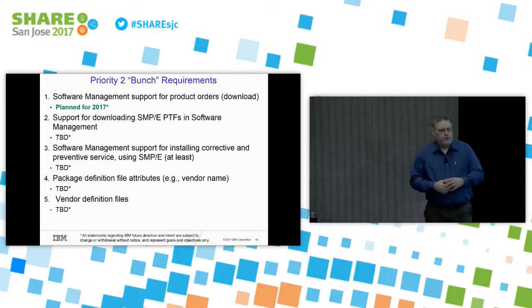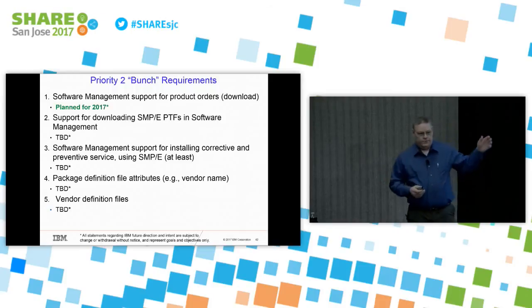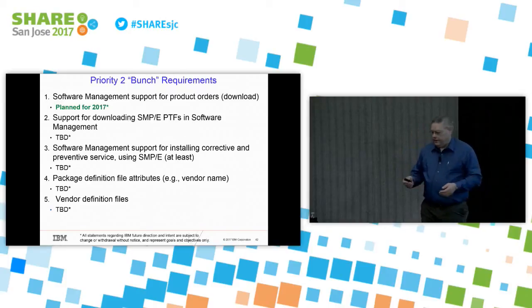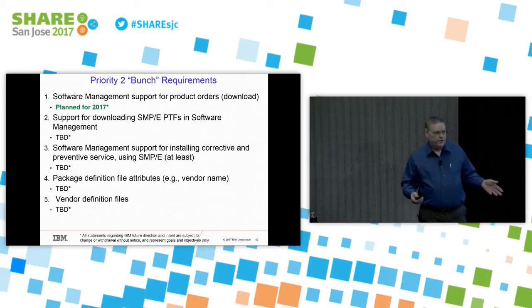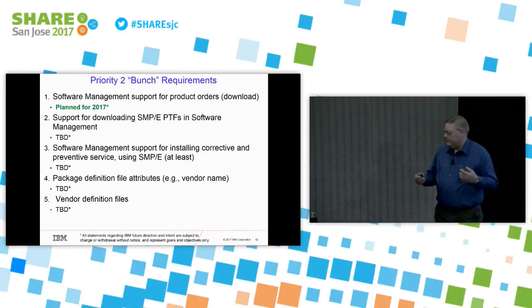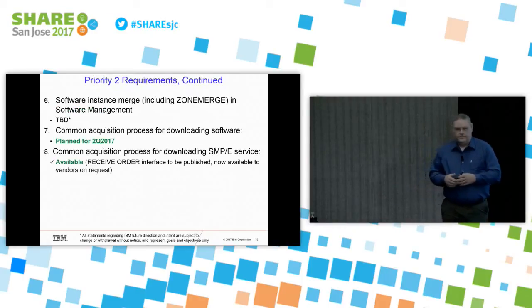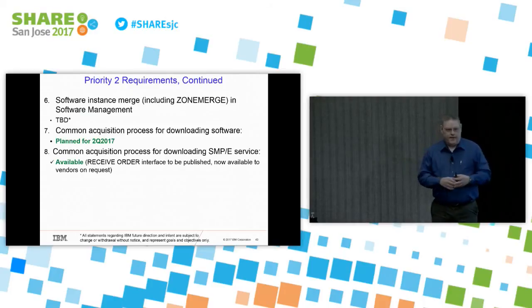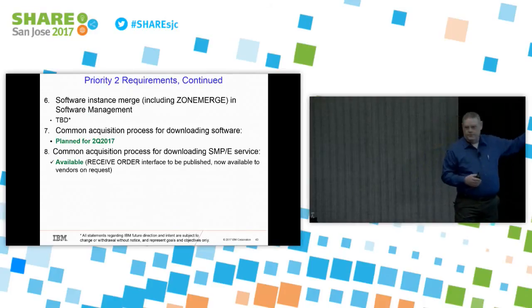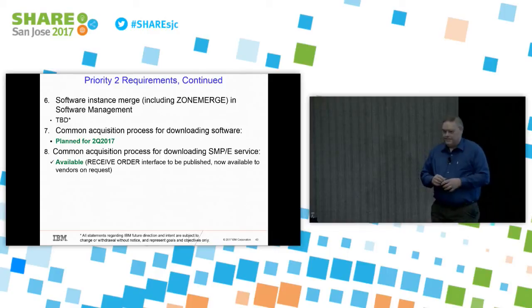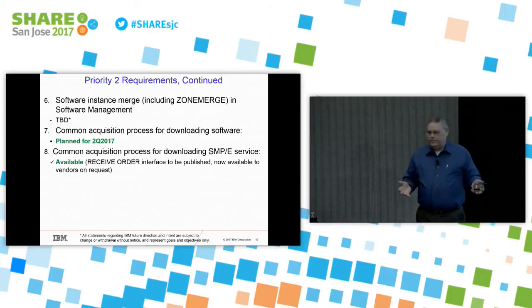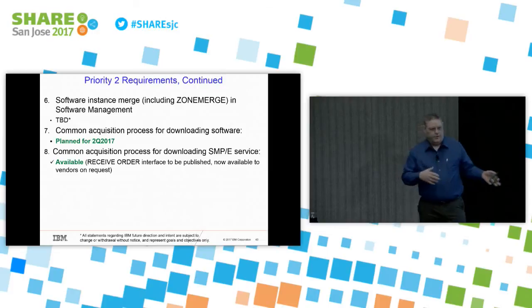We sat down with them at SHARE and have technical disclosure meetings usually about once a year. They told us their priority ones — these are numbered only for ease of reference, so number six is not below number two in priority; they're all equivalently important. As you can see, we've been working our way down the list. We have a couple of things available, one planned for 2018, and a couple of other things to work out. Then there's a priority two bunch as well, likewise not an ordered list.